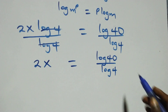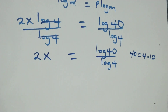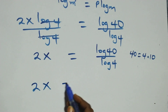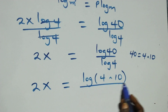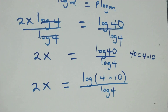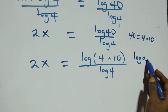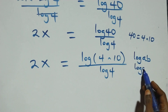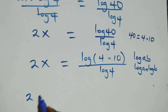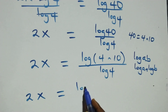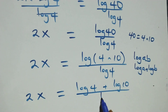Then from here, we can express 40 as 4 times 10. That is, what we have here becomes 2x equals log(4 times 10) over log 4. This follows the law of logarithm: log(a times b) is the same as log a plus log b. So what we have here becomes 2x equals (log 4 plus log 10) over log 4.